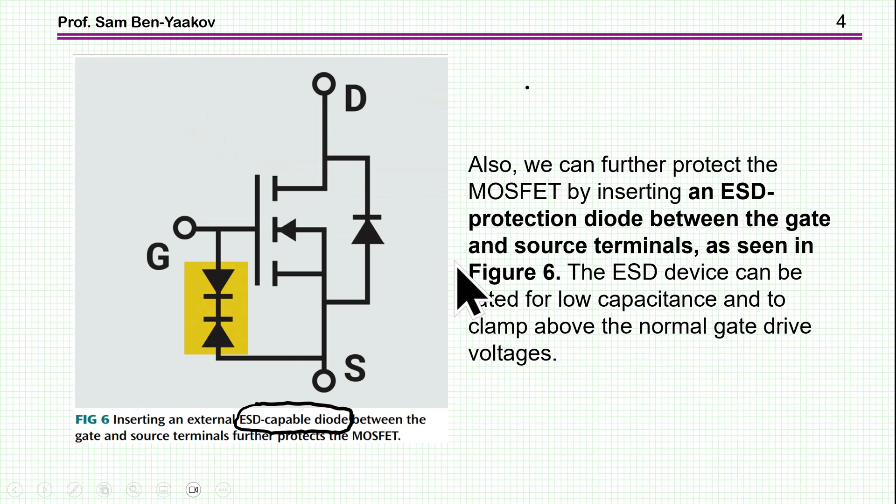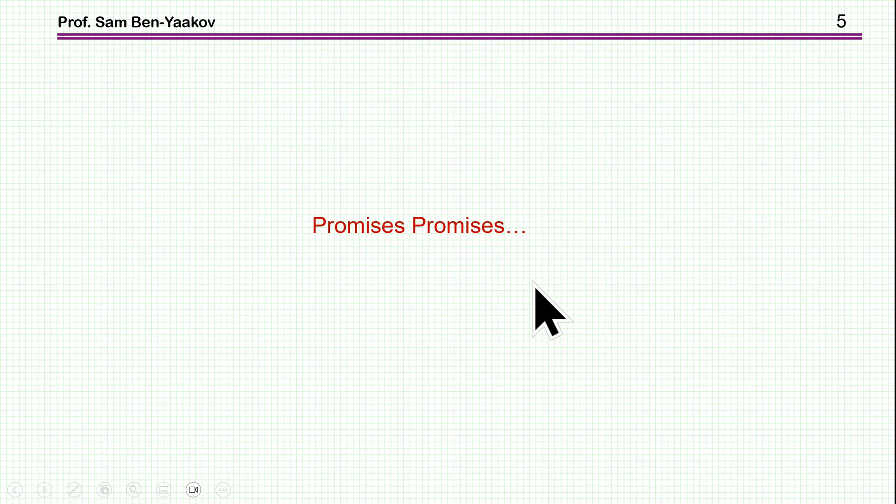And then there is another example here, and this is a transistor, and then we have the back-to-back ESD-capable diodes or rectifier. It says that we can further protect MOSFET by inserting an ESD-protection diode between the gate and source terminal, as seen in Figure 6. So these are the examples given for this ESD-capable rectifier, but unfortunately, I think these are just promises.